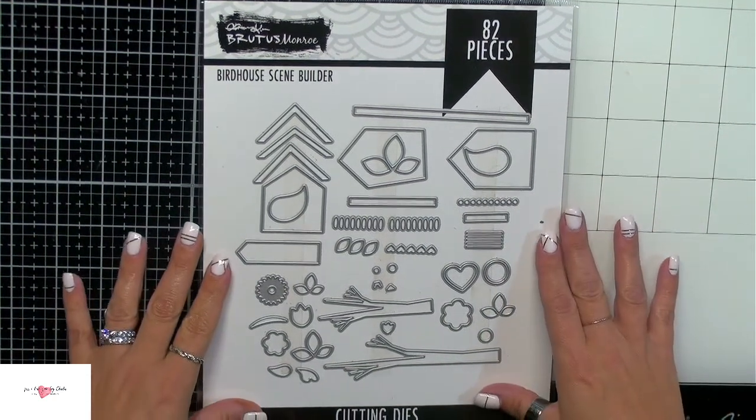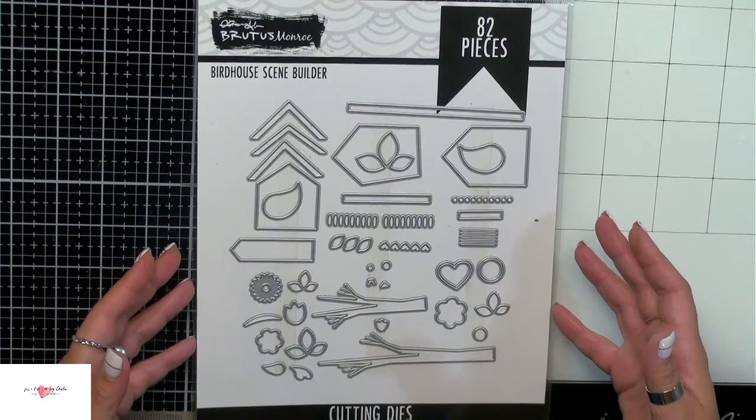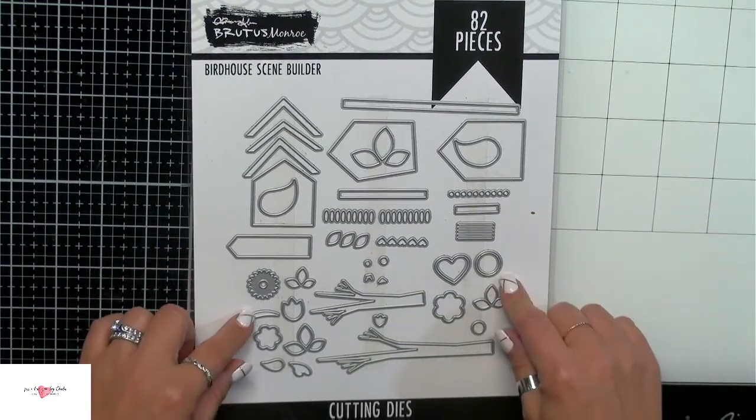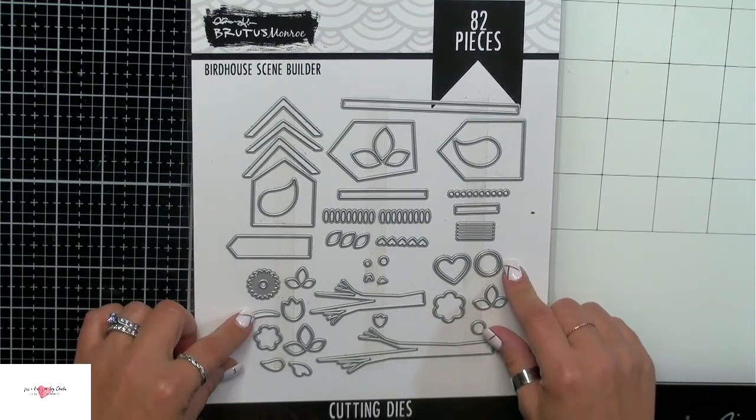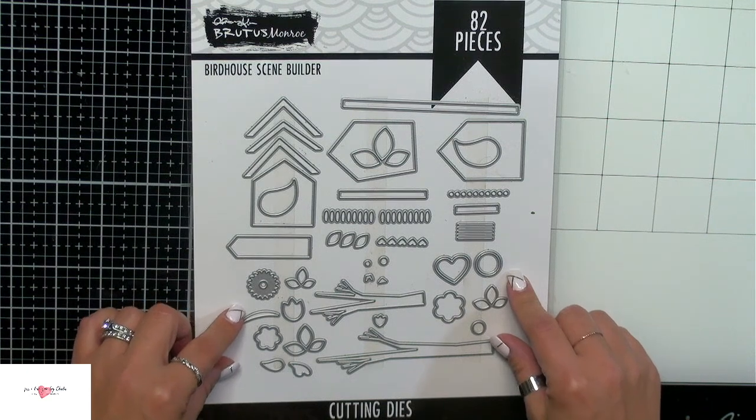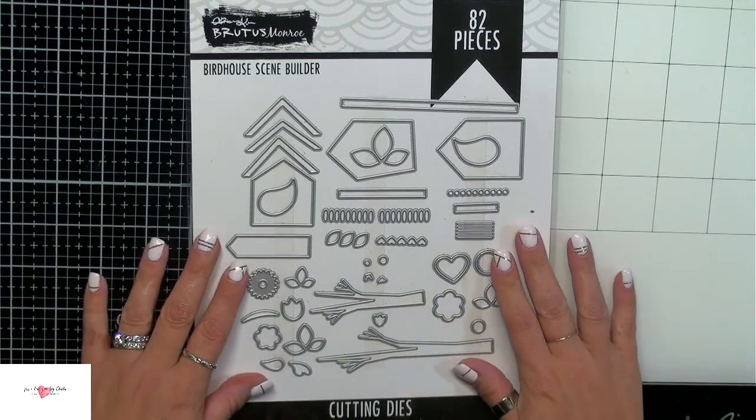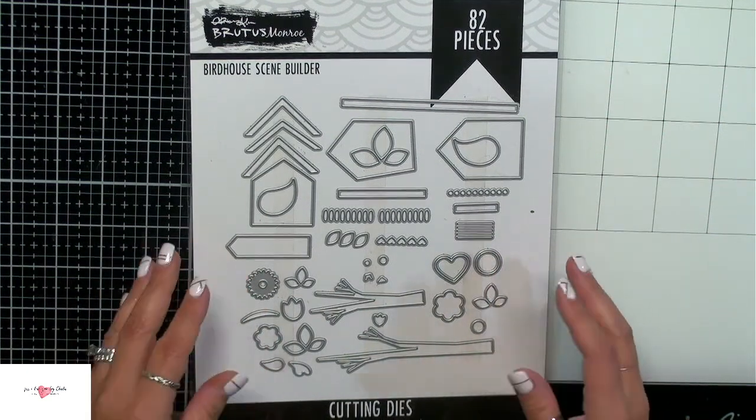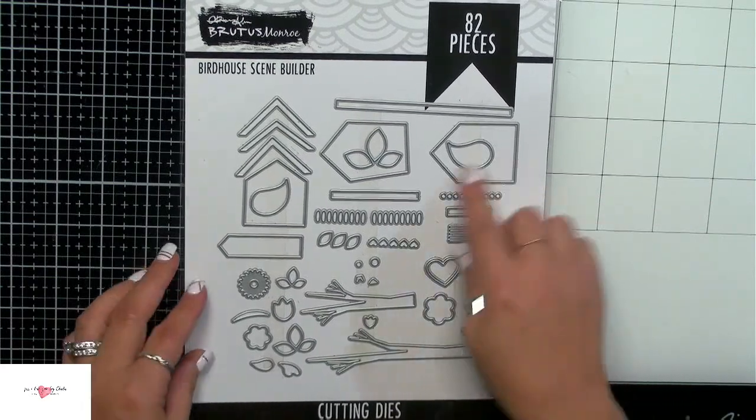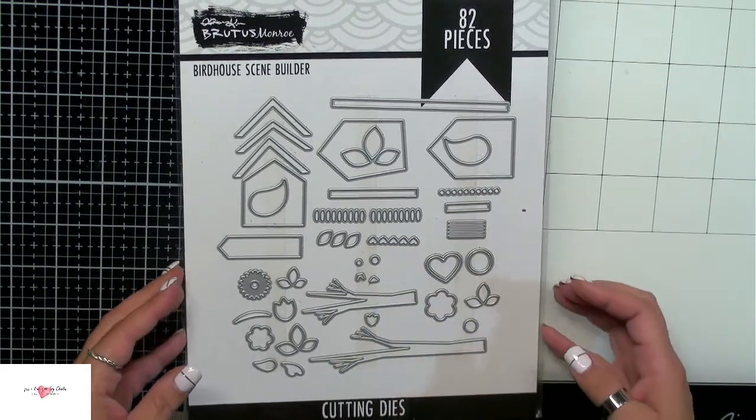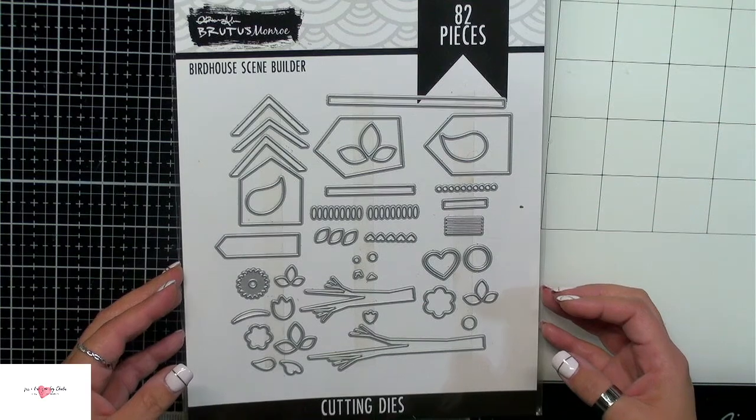My first card today is going to be using this amazing die cut set from Brutus Monroe called Bird House Scene Builder. There is so much that you can do with this die set. It is a great price point. There's 82 pieces within it. There's lots of mixing and matching you can do.